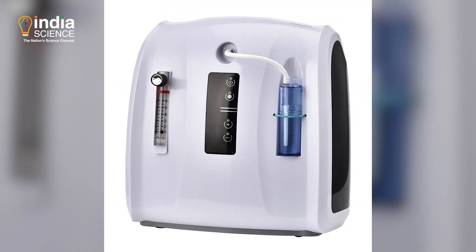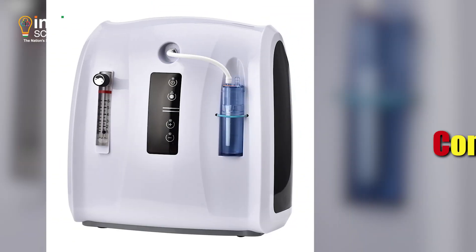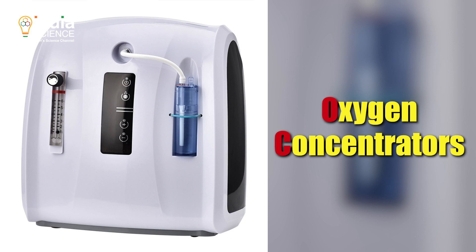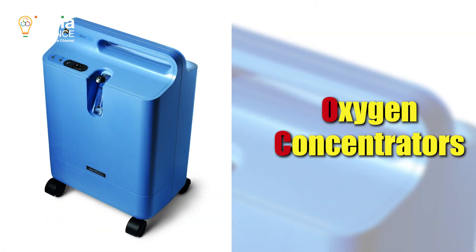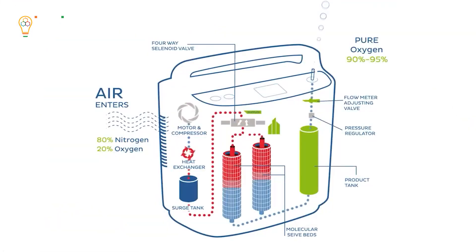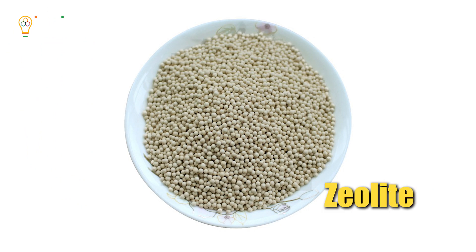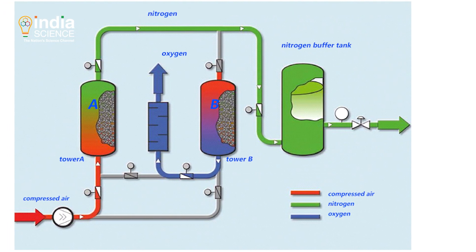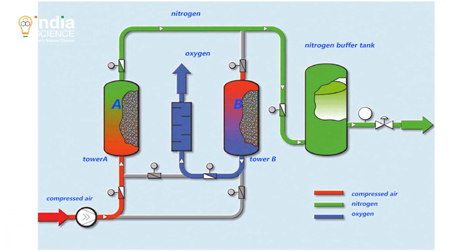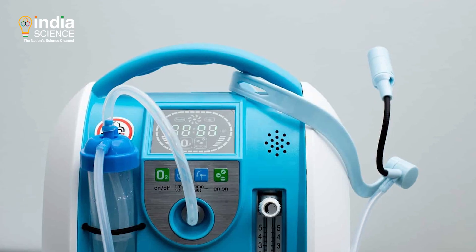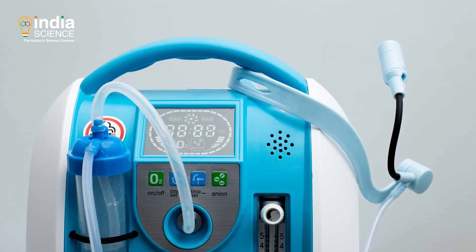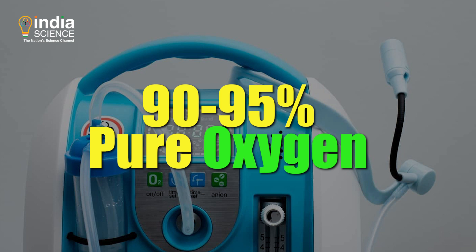There are portable oxygen generators as well, known as oxygen concentrators. These can be used at home. In this, the air is compressed using compressors and then sent to sieve beds. In sieve beds, there is a compound called zeolite, which separates the nitrogen from oxygen. This leads to the generation of pure oxygen, and the resultant air is 90 to 95 percent pure.